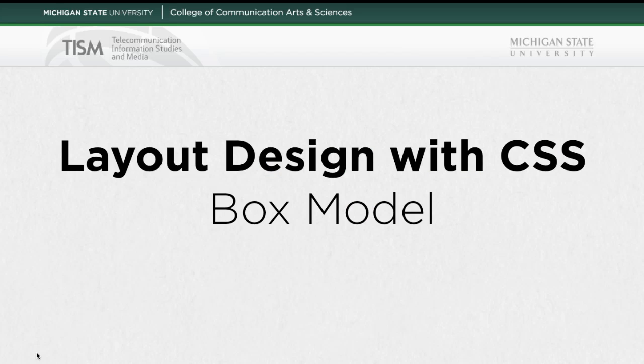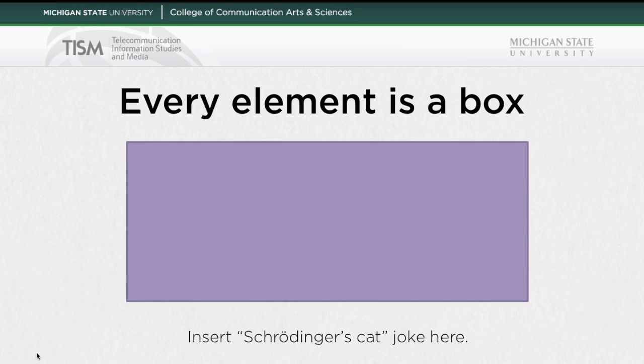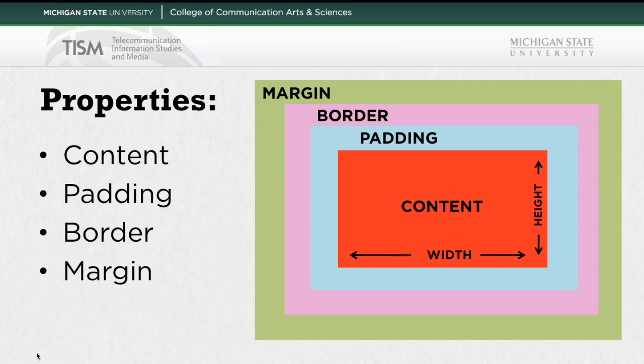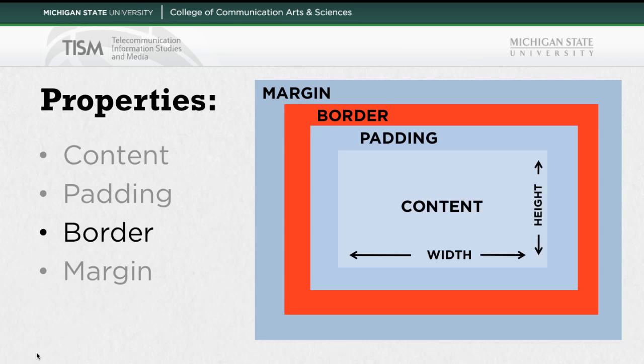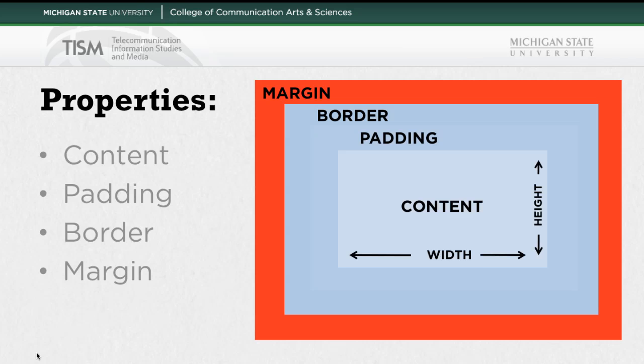Layout design with CSS. Box model. So even though you can't really see it sometimes, every element is in a box — a rectangle, essentially. There are different properties for this: there's content, padding, border, and margin.